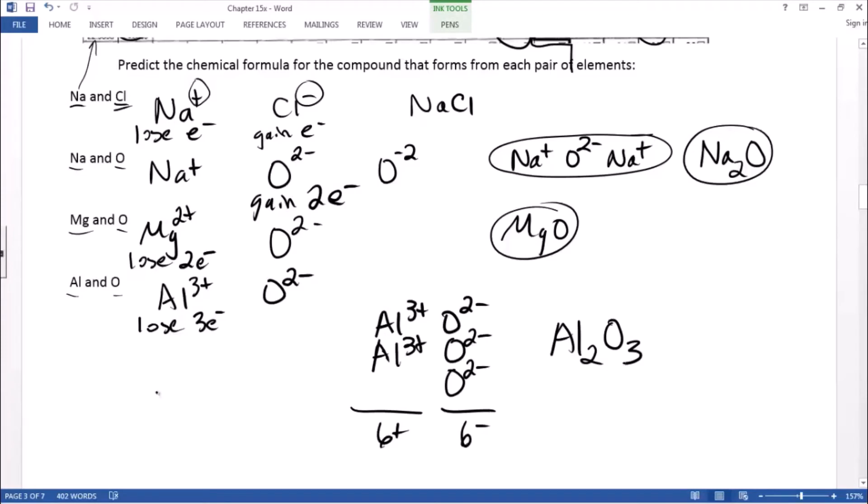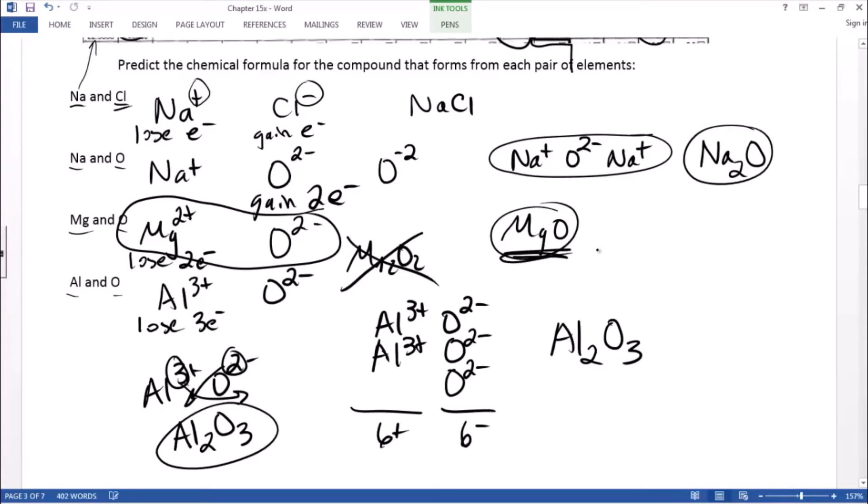That's a long way. Shortcut. What you do is it doesn't always work. You need to check, but crisscross. Take the three of aluminum, put it down here for oxygen. Take the two of oxygen, put it down here for aluminum. Now when it doesn't work, is a case like this. If you crisscross, you get the wrong chemical formula. Crisscrossing, you want to put twos down there. Mg2O2? Uh-uh. That's not the formula. The formula is just MgO. Don't have to crisscross. The charges already cancel.